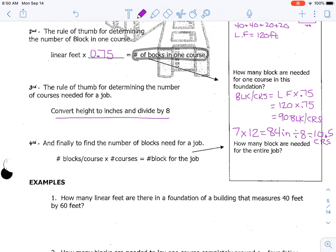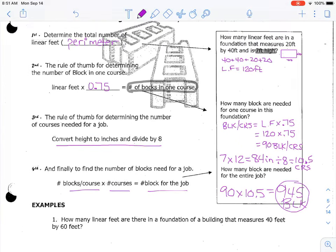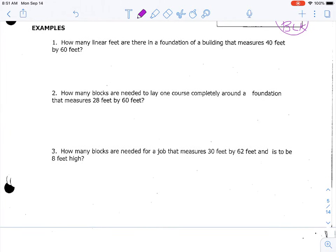So then the last part of this process is that we would take the blocks per course, multiply it by how many courses we have, and then that'll tell us how many blocks we need for the entire job. So we are going to take our 90 because that's how many blocks per course there are, and we'll take it times 10.5, and we get 945 blocks. So just like brick, there's a process, there's a step one, step two, step three, step four.